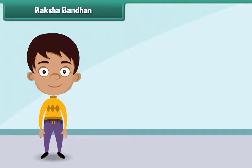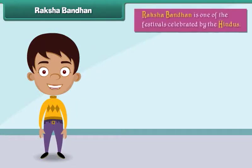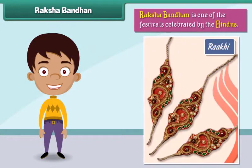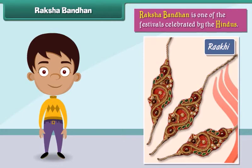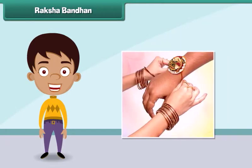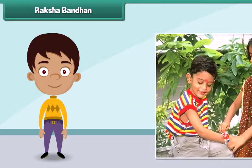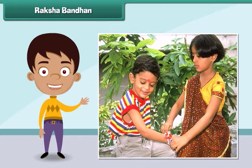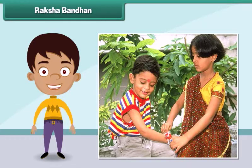Raksha Bandhan is one of the festivals celebrated by the Hindus. On this day, sisters tie rakhis on the wrists of their brothers and pray for their well-being. In return, brothers promise to protect their sisters from all evil.